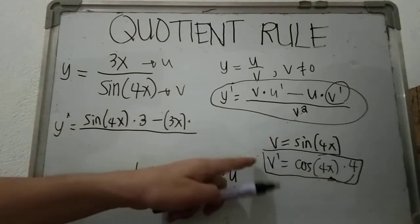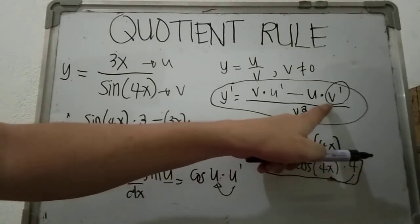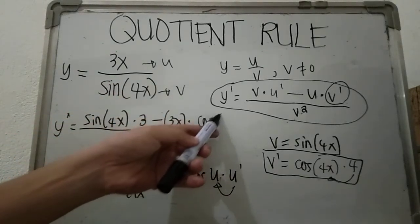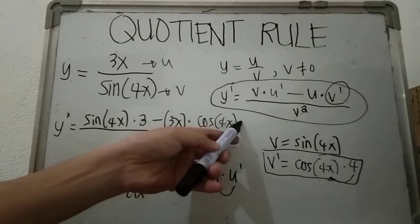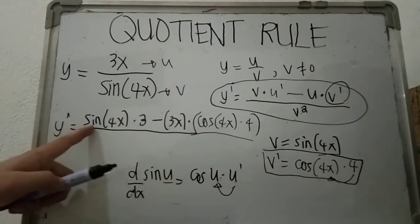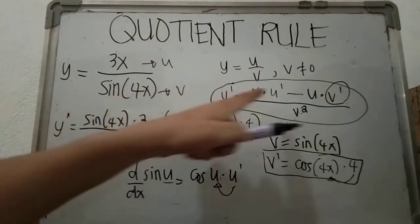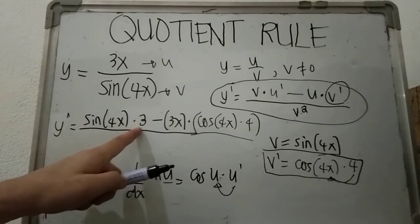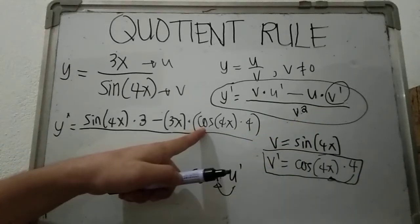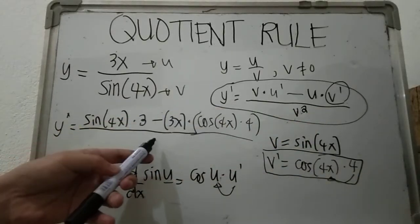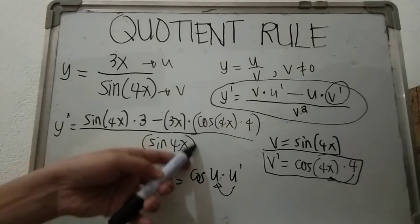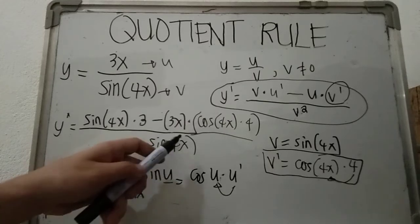This value, cosine 4x times 4, is what we substitute for v prime. So we have: sine 4x times 3 minus 3x times cosine 4x times 4, all over the denominator v squared. Our v is sine 4x, and take note you have to square it.